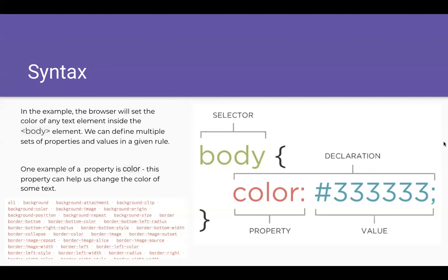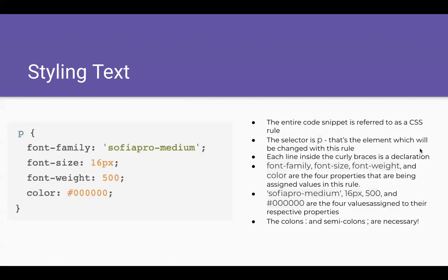This might feel complex at first because there are many parts, but the entire premise is actually super simple once you start practicing. It's basically three parts: you select a part, define what you want to customize, and give it a value. Besides color, there are also other ways to style text — for example, font-family, font-size, and font-weight, in addition to color. This entire code snippet is referred to as a CSS rule. In this example the selector is P, which stands for paragraph, and each line inside the curly braces is a declaration.